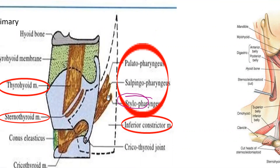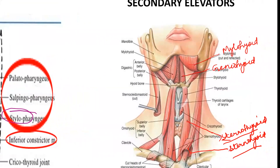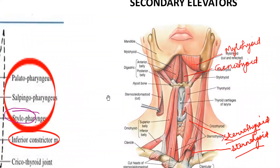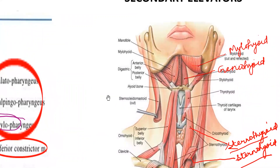All these primary elevator muscles, by their contraction, cause elevation of the larynx as a whole. Among the secondary elevators are muscles attached to the hyoid bone. Through movement of the hyoid bone they also cause movement of the larynx, since the hyoid bone is attached to the thyroid cartilage by the thyrohyoid membrane. So whenever elevation of the hyoid bone occurs, there is also elevation of the larynx. These secondary elevators are the mylohyoid, geniohyoid, and digastric muscles.